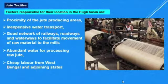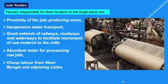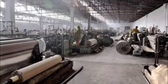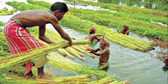Let us study some factors responsible for the location of jute textile mills in the Hooghly Basin — an area covered by River Hooghly and its tributaries. The first factor is proximity of jute-producing areas, as jute is produced around the Hooghly River. Second is inexpensive water transport. Third, a good network of railways, roadways, and waterways facilitates movement of raw material. Cheap labor, both local and migrant, is available. There is also abundant water for processing raw jute, which must be soaked, cleaned, and dried.